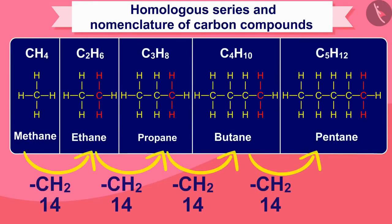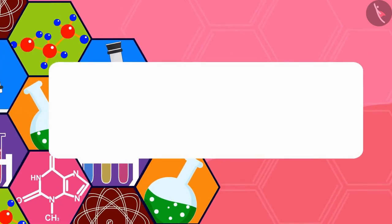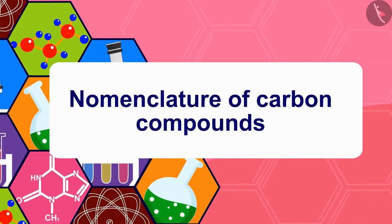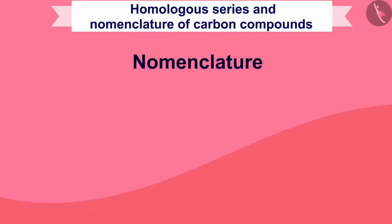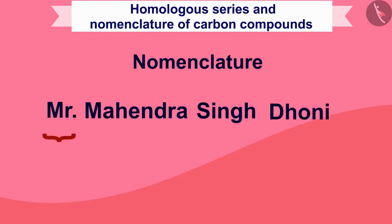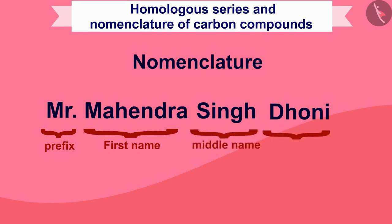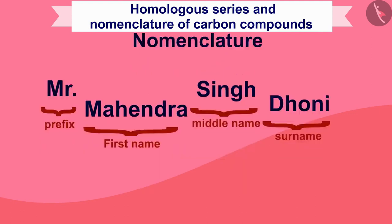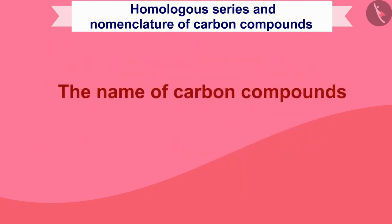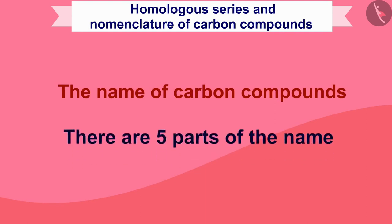Hope you will not have any confusion related to homologous series. Let us now study the method of naming carbon compounds. Before understanding the nomenclature of carbon compounds, we will see an example of a name, like Mr. Mahendra Singh Dhoni. In this name, 'Mr.' can be called prefix, Mahendra is the first name, Singh is the middle name, and Dhoni is the surname. Similarly, the name of carbon compounds is also divided into five parts.